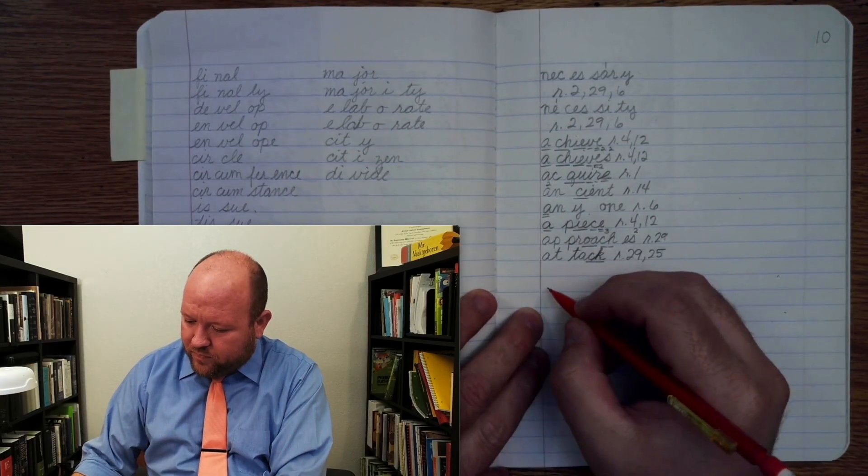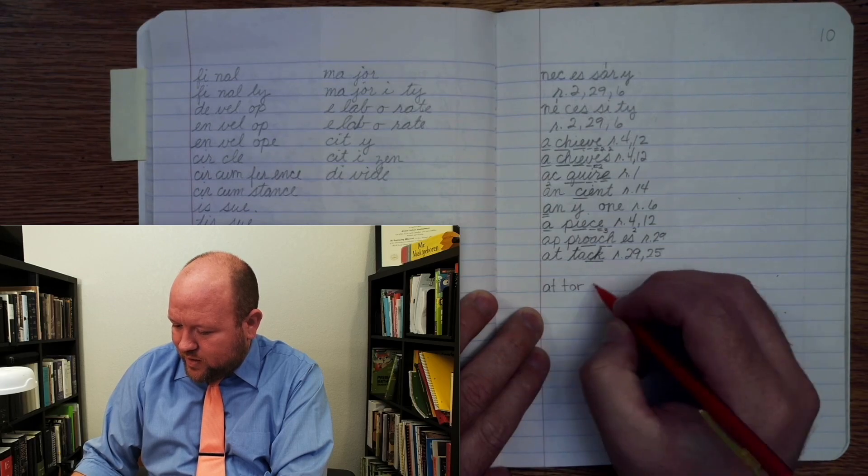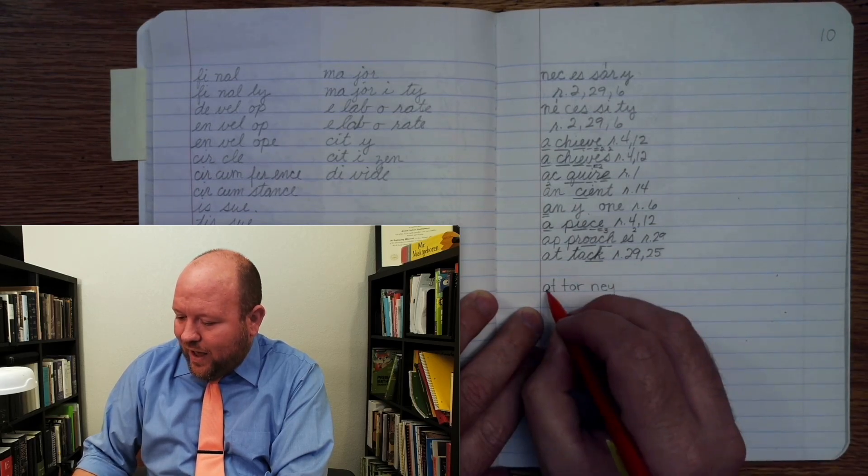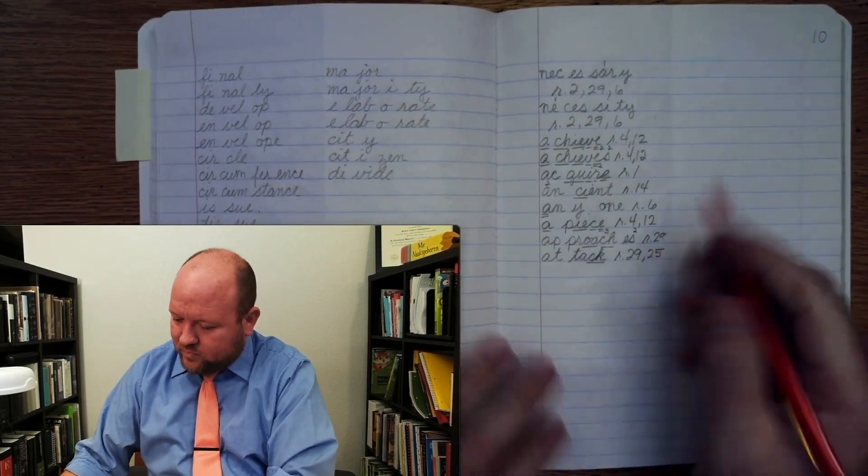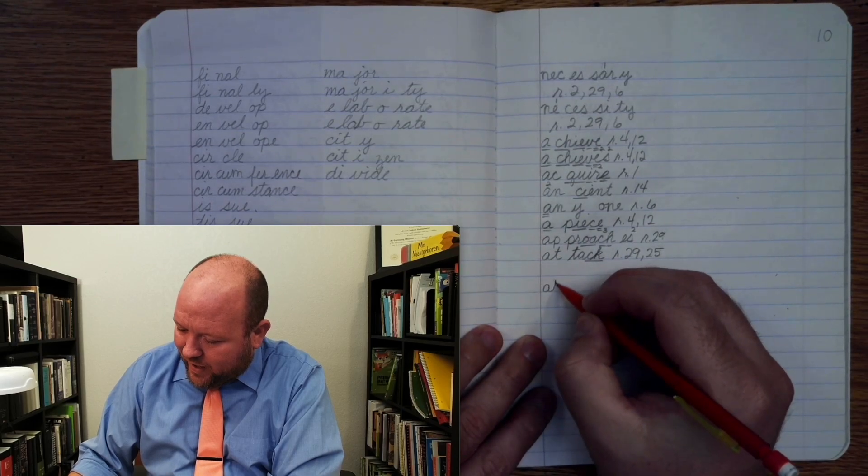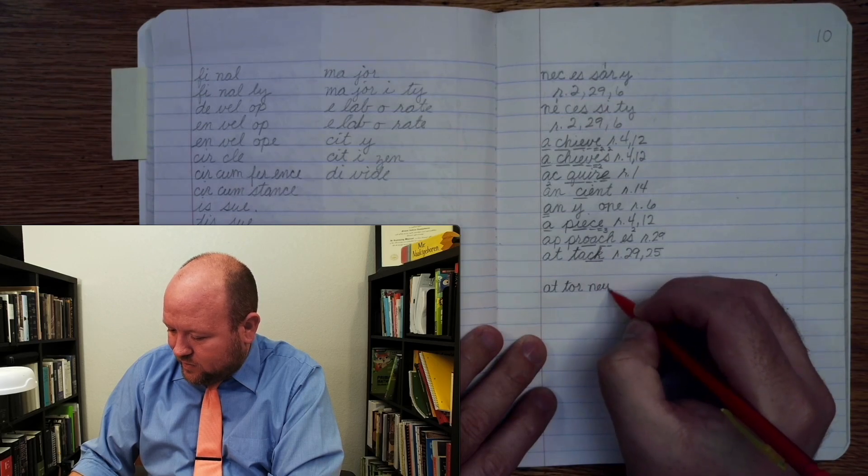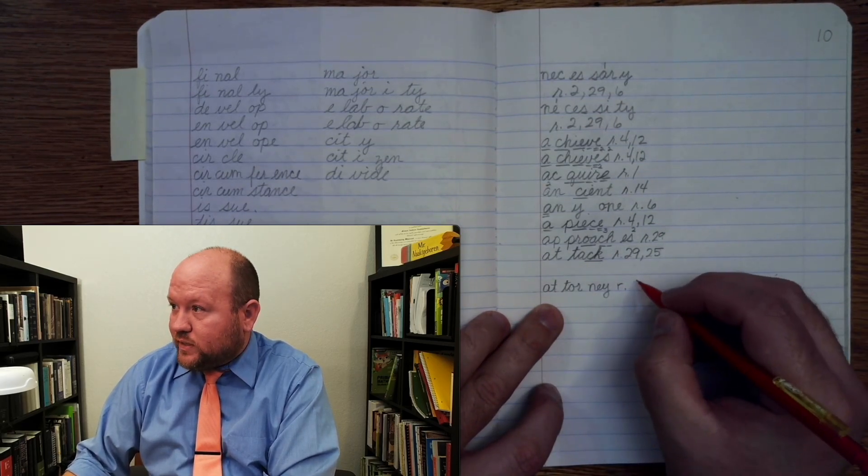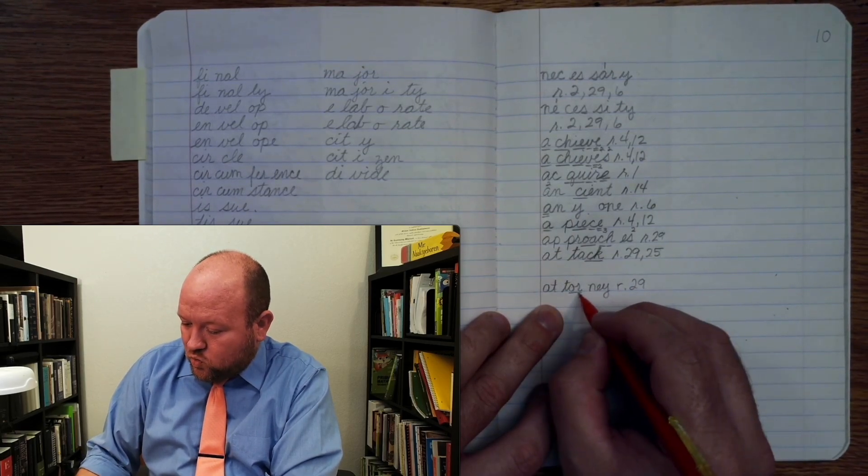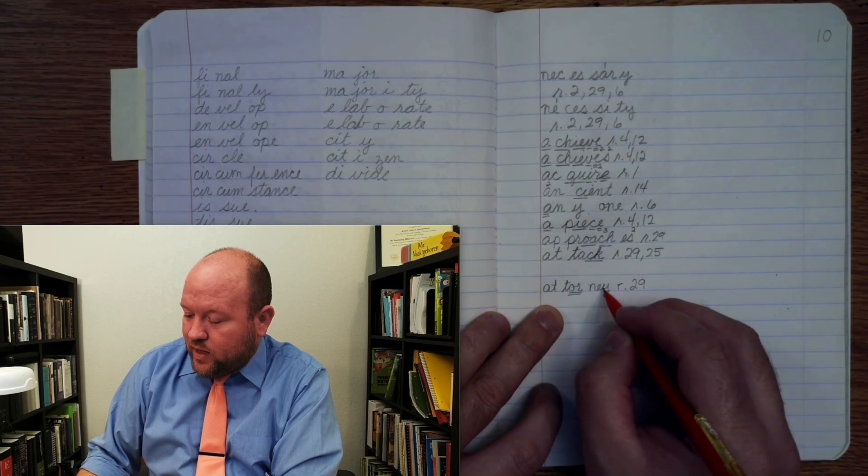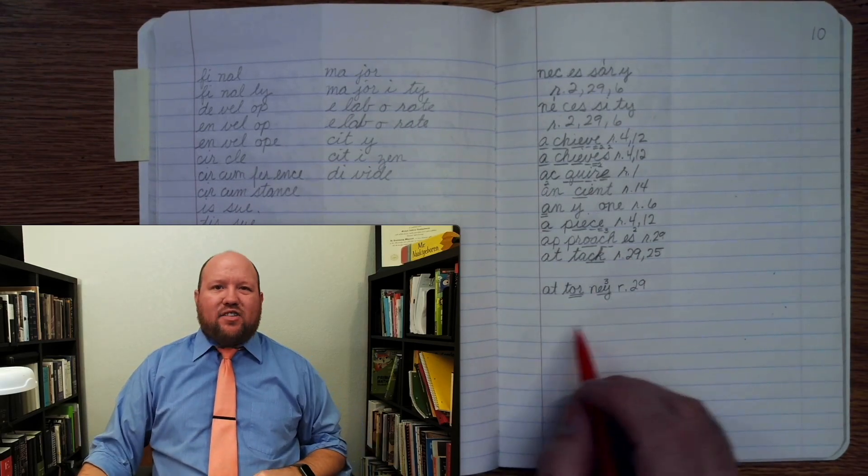Attorney. At-ter-ne. At-ter-ne. Oops, I didn't write that in cursive. Let me do that in cursive. At-ter-ne. At-rule 29. At-ter, twice. Once, three. Because we don't say attorney, right?